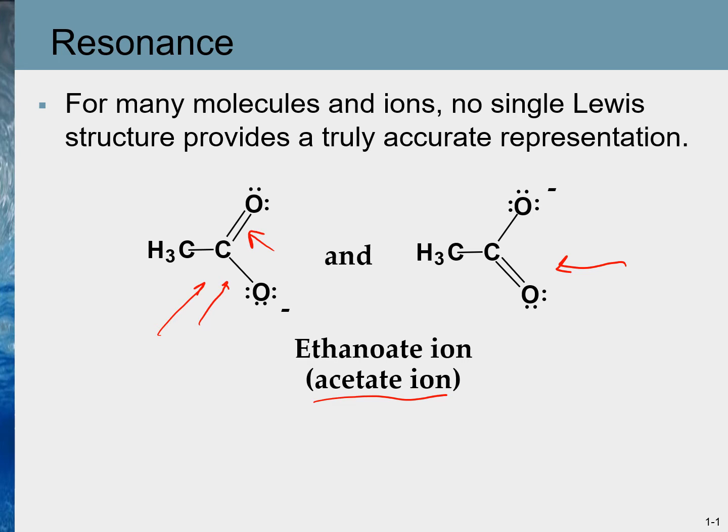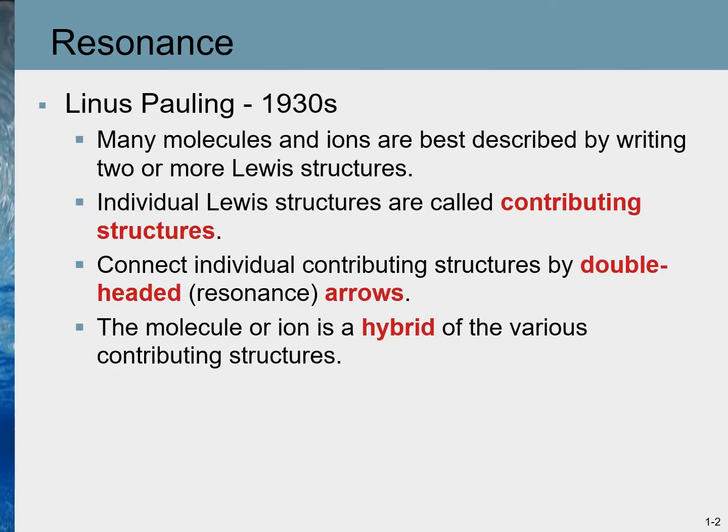To explain all these differences, a theory of resonance was developed in the 1930s. This theory was mainly developed by Pauling. According to this theory, many molecules and ions are best described by writing two or more Lewis structures and considering the real molecule or ion to be a composite of these structures.